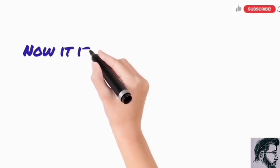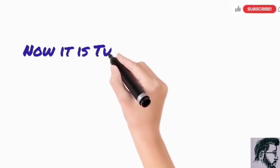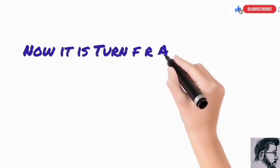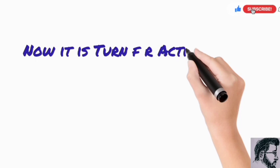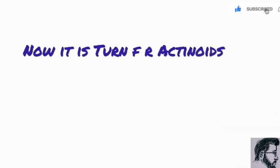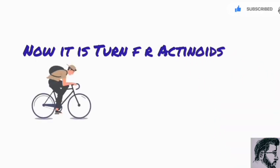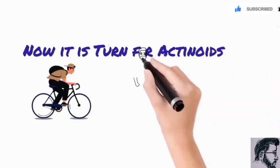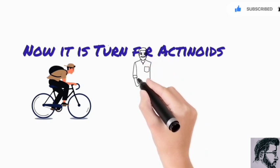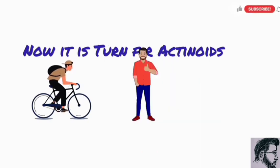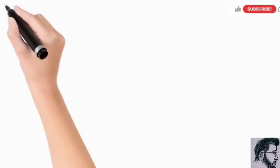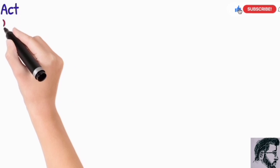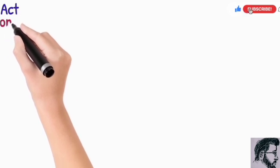Now we are going to discuss actinoids. We have already mentioned one fact: the first member of actinoids, that is actinium, is actually not an F-block element, because its outermost electron goes into the D orbital, not the F orbital.